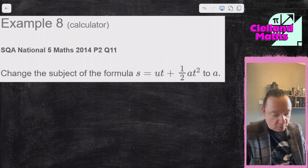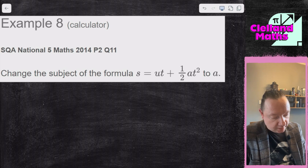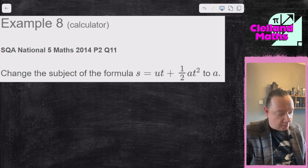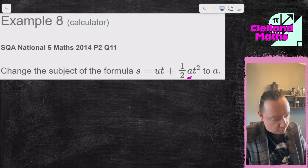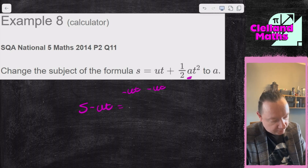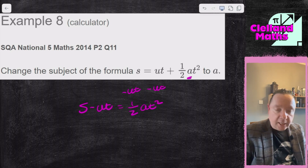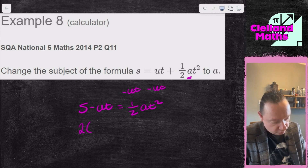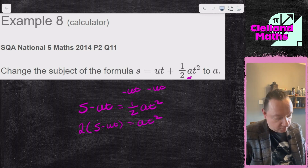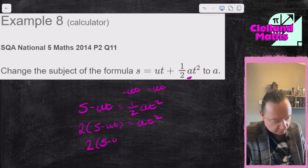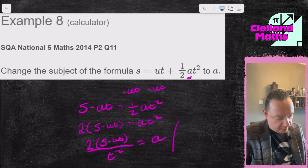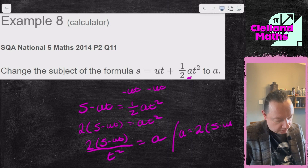Example 8 — SQA National 5 Maths 2014, Paper 2, Question 11. Change the subject of the formula s = ut + ½at² to a. Where's my a? I'm going to take away ut from both sides: s minus ut equals ½at². Multiply everything by 2 to get rid of that fraction: 2(s minus ut) equals at². Finally, divide by t²: a equals 2(s minus ut) all over t². And we're done.